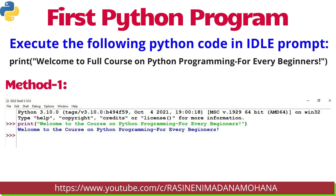In Method 1, you can open IDLE and directly type the message you want to display using the print command. Print is a function. Here we are displaying a text message, which can be included within double quotes or single quotes. The command is: print("Welcome to the course on Python programming for every beginners"). To execute, in the debug menu the Run option is there, or you can directly press Enter on your keyboard, and the output is displayed.